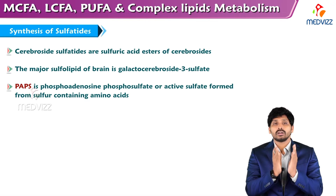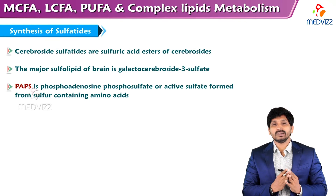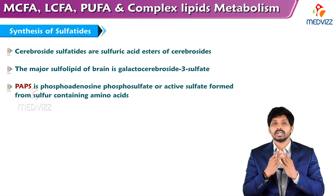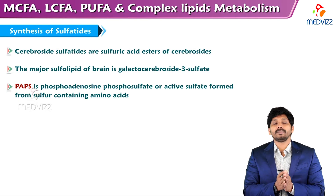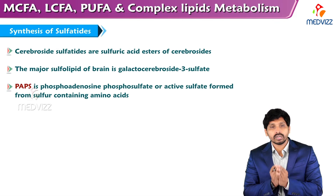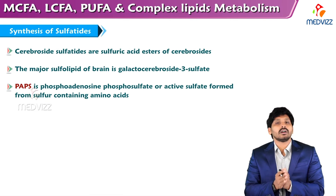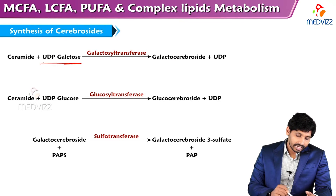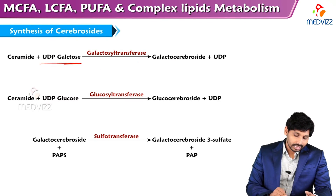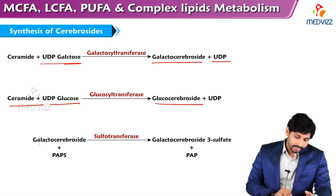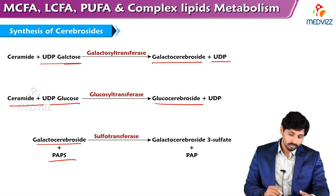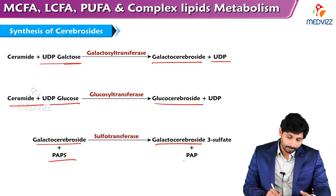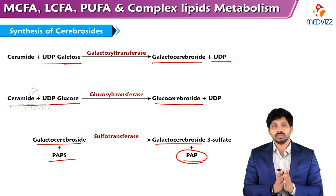Sulfatides are sulfuric acid esters of cerebrosides — carbohydrate lipids with an attached sulfate group. The major sulfolipid of the brain is galactocerebroside-3-sulfate. PAPS (phosphoadenosine phosphosulfate) is the active sulfur donor in the body, formed from sulfur-containing amino acids. In cerebroside synthesis, UDP donates galactose to ceramide to form galactocerebroside, releasing UDP. Ceramide plus UDP-glucose forms glucocerebroside. Galactocerebroside plus PAPS forms galactocerebroside-3-sulfate (sulfatides) and PAP, as the sulfur group is donated to galactocerebroside.